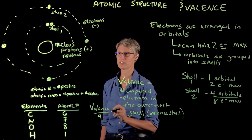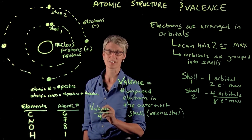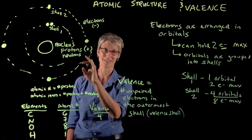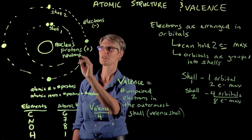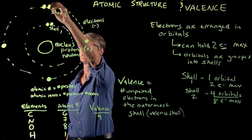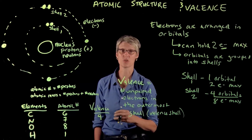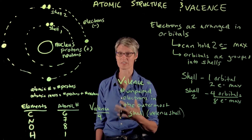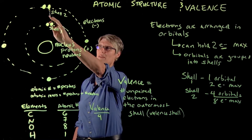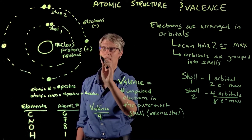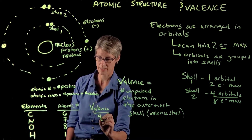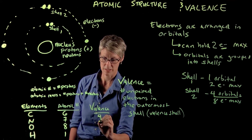Now what about nitrogen? Nitrogen has one extra proton and one extra electron over carbon. That extra electron has to join another electron in its orbital since there isn't an empty orbital for it. So we have one paired orbital and three unpaired electrons. That gives nitrogen a valence of three.